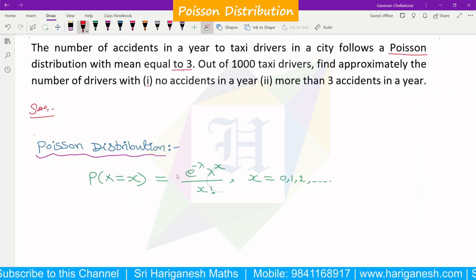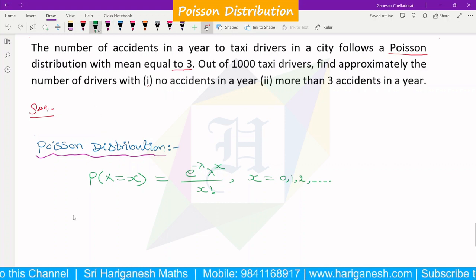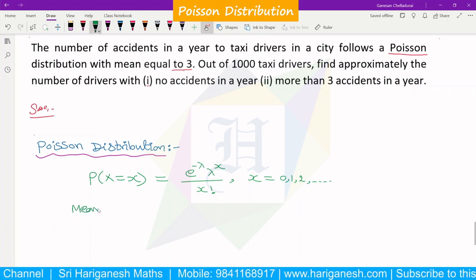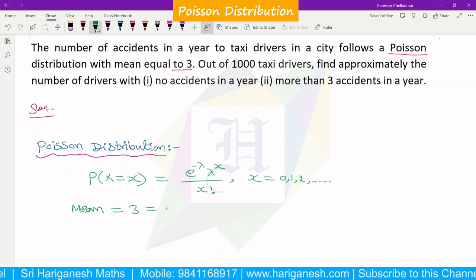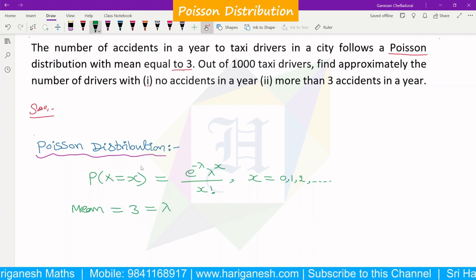So this is Poisson distribution probability mass function PMF. In the problem, mean is equal to 3. So in our introduction video mean is lambda, so lambda value we will substitute.